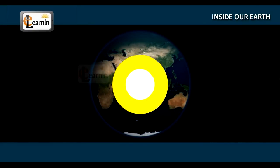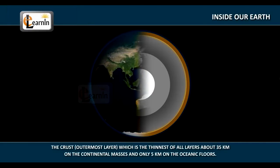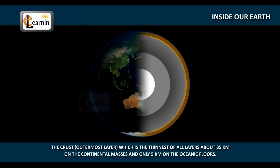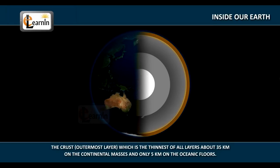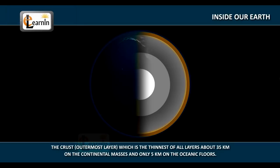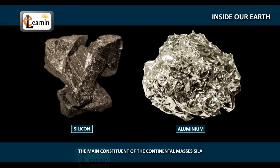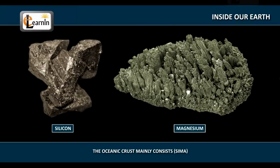The Earth is made up of several concentric layers with one inside the other. The outermost layer is called the crust, which is the thinnest of all layers, with a thickness of about 35 km on the continental masses and only 5 km on the oceanic floors. The main constituent of the continental masses is silica and aluminum, also referred to as sial, whereas the oceanic crust mainly consists of silica and magnesium and is therefore called sima.